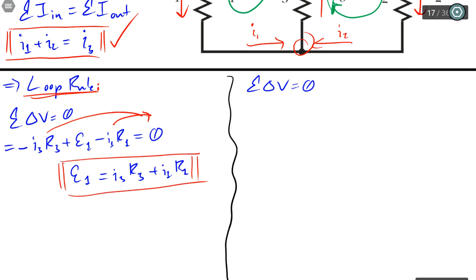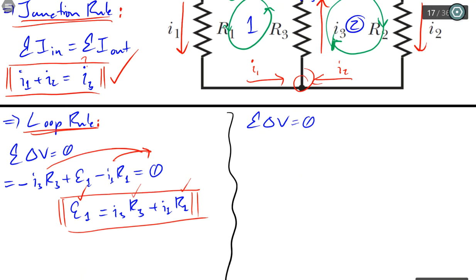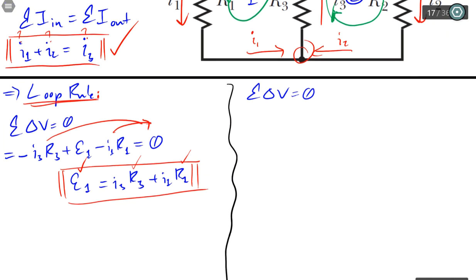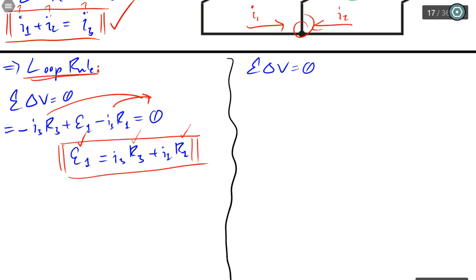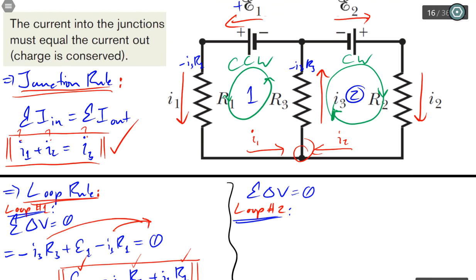Now in a problem like this, hopefully something like the EMF battery one is provided, and resistances hopefully are provided. Usually you're asked to solve for the current in this case. So watch out for our future video. I forgot to label these, so let's label this loop one and this is loop number two. So let's go ahead and do loop number two. So for loop number two, we're actually going clockwise.